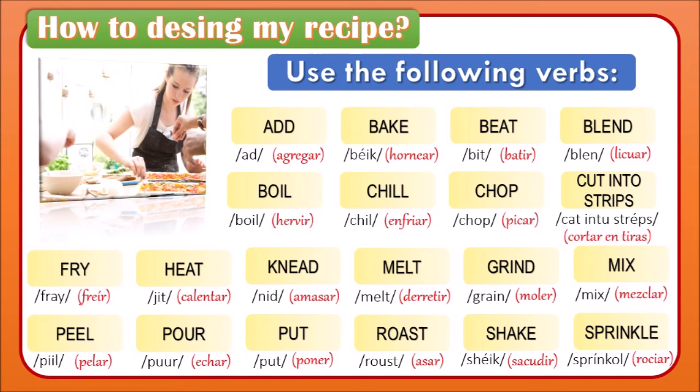The verbs are: bake, beat, blend, boil, chill, chop, cut into strips, fry, heat, melt, grind, mix, peel, pour, put, roast, shake, and sprinkle. You can use any of these verbs from the list for your recipe.